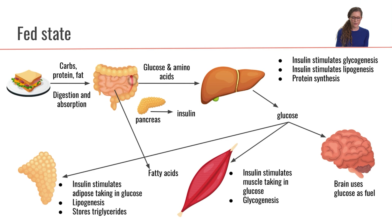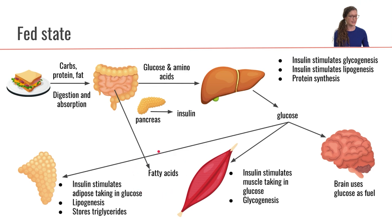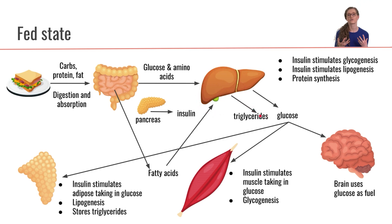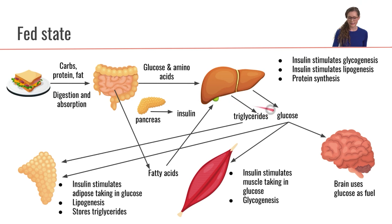Now the fatty acids that we ate from our meal don't go through that first pass to the liver — they go through a different route where they actually go out to the body first before going back to the liver. Those fatty acids from our meal eventually get taken up by the liver, which can then excrete or send out triglycerides to the body, and those triglycerides will primarily be taken up by the adipose tissue.